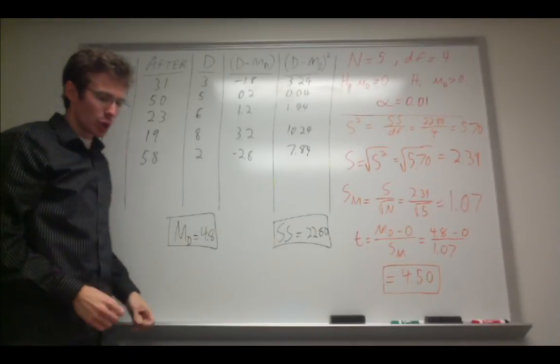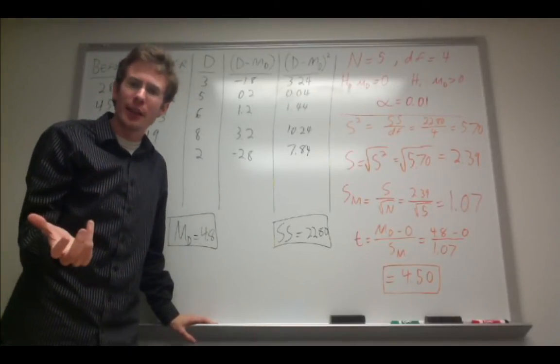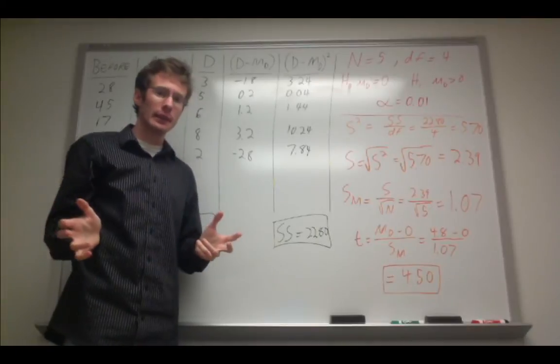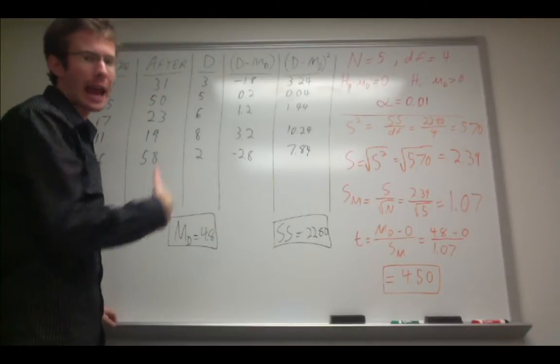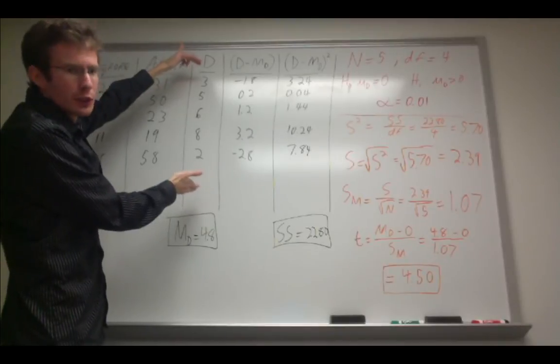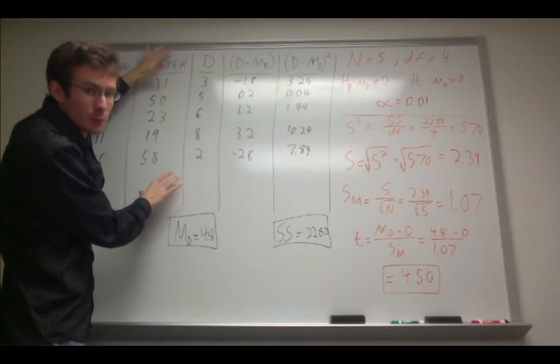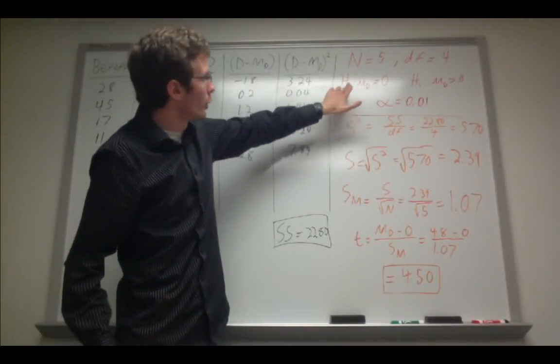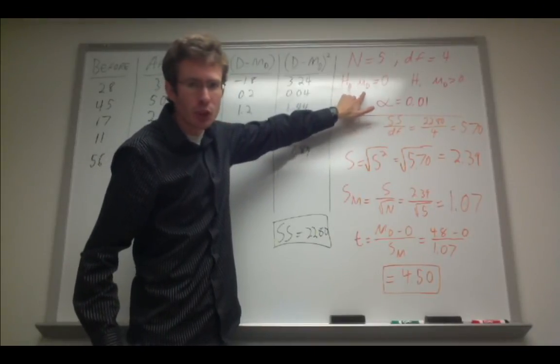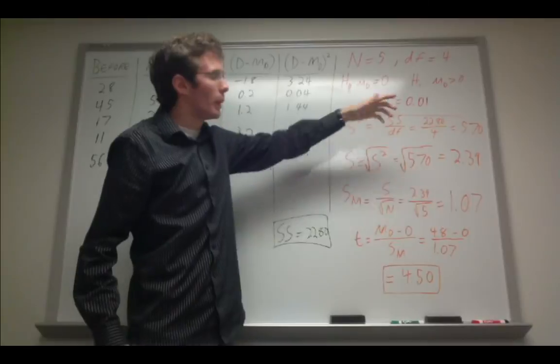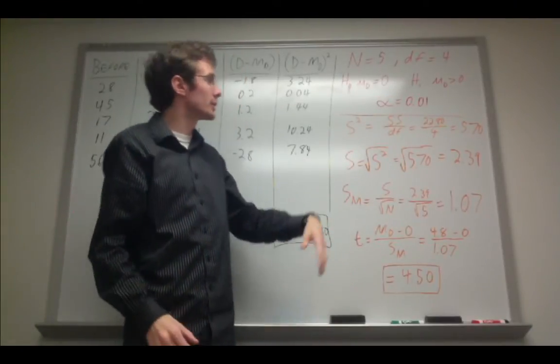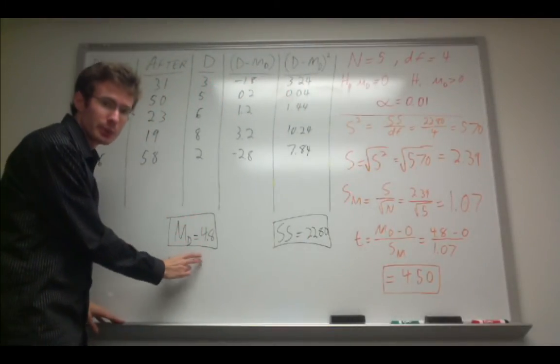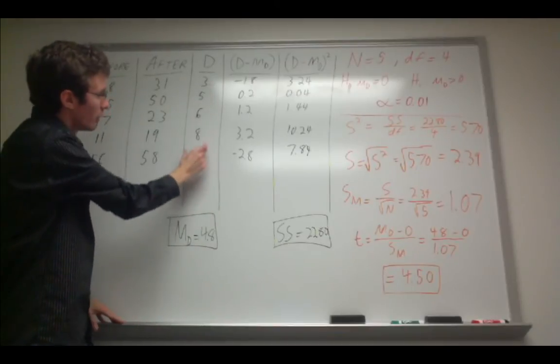This is important because with a repeated measures design our null hypothesis is that there should be no difference. Remember null hypothesis means there's no effect. So in that case we would suspect that on average there shouldn't really be a meaningful difference from time point one to time point two. So you can see up here I have some of my parameters written out. For the null hypothesis the mean difference, mu subscript d, is going to equal zero. My alternative hypothesis, let's say it's a one-tail test in this case, and I think that the mean difference is going to be greater than zero. That's why we calculate this mean difference down here, simply the average of all these difference scores.